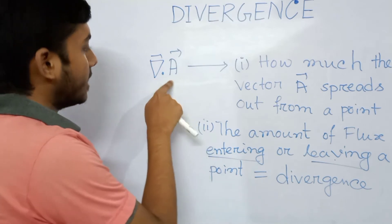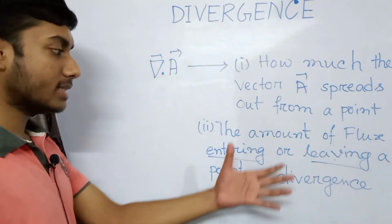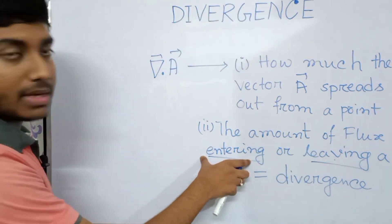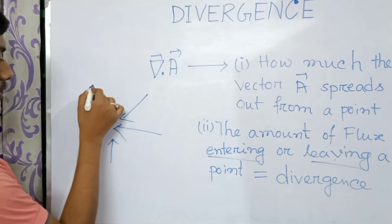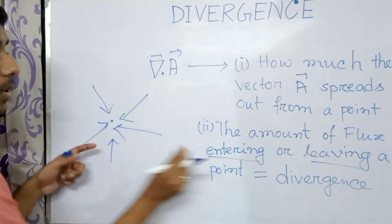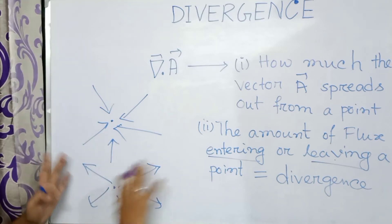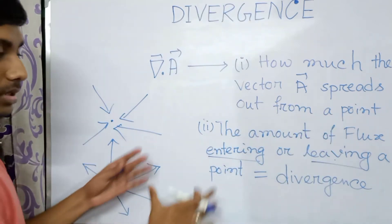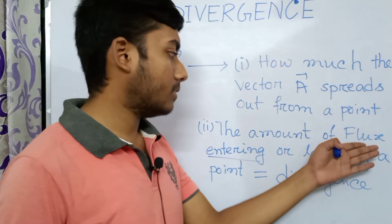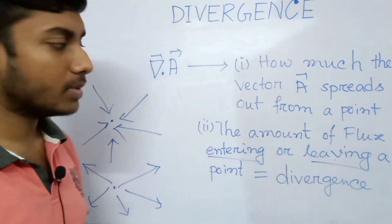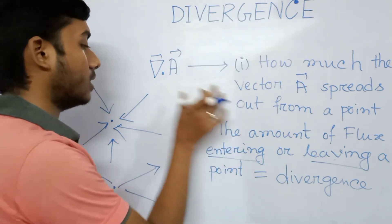Or we can say it another way: divergence is the amount of flux entering or leaving a point. Entering means converging — suppose these vector fields are converging into a point. Or leaving — here the vectors are leaving from a point. So the amount of flux entering or leaving a point is called the divergence. We will gradually come to the relation between flux and divergence.